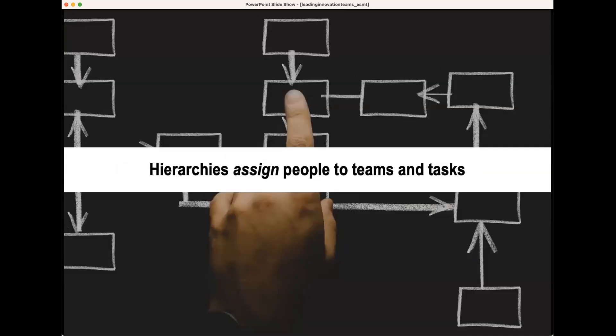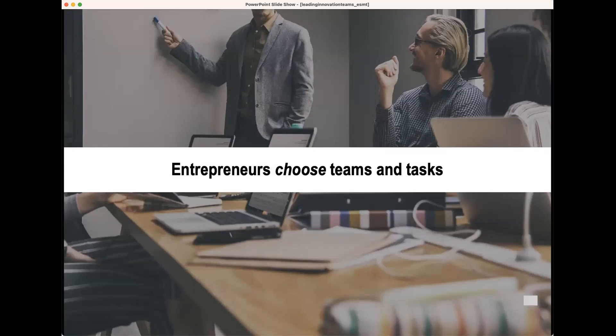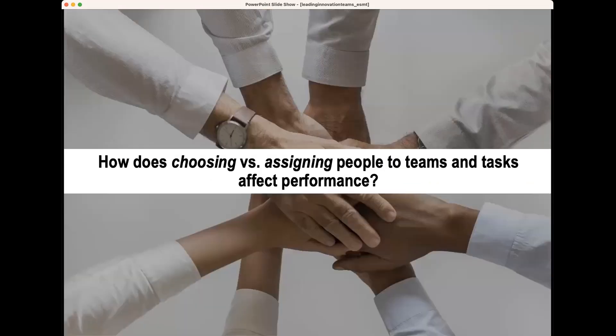In most organizations, hierarchy assigns people to teams and tasks — sometimes you're told to do a particular project with a particular person and report back how it went. In entrepreneurship settings, you have the luxury of choosing team members, ideas, and tasks. This opens an interesting question: how does choosing versus assigning people to teams and ideas affect team performance? Is it necessarily the case that having complete freedom of choice outperforms having no freedom, or is there some match in between that's the silver bullet?